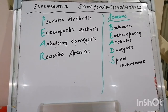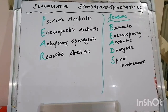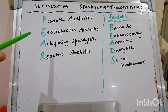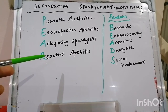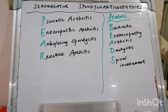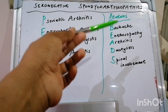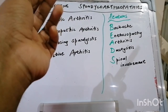Let's talk today about seronegative spondyloarthropathies. This is always included in the differential of oligoarthritis. The different clinical entities that encompass the seronegative spondyloarthropathies include P for psoriatic arthritis, E for enteropathic arthritis, A for ankylosing spondylitis, and R for reactive arthritis. The clinical features of the spondyloarthropathies include backache, enthesopathy, arthritis, dactylitis, and spinal involvement — all to varying degrees.